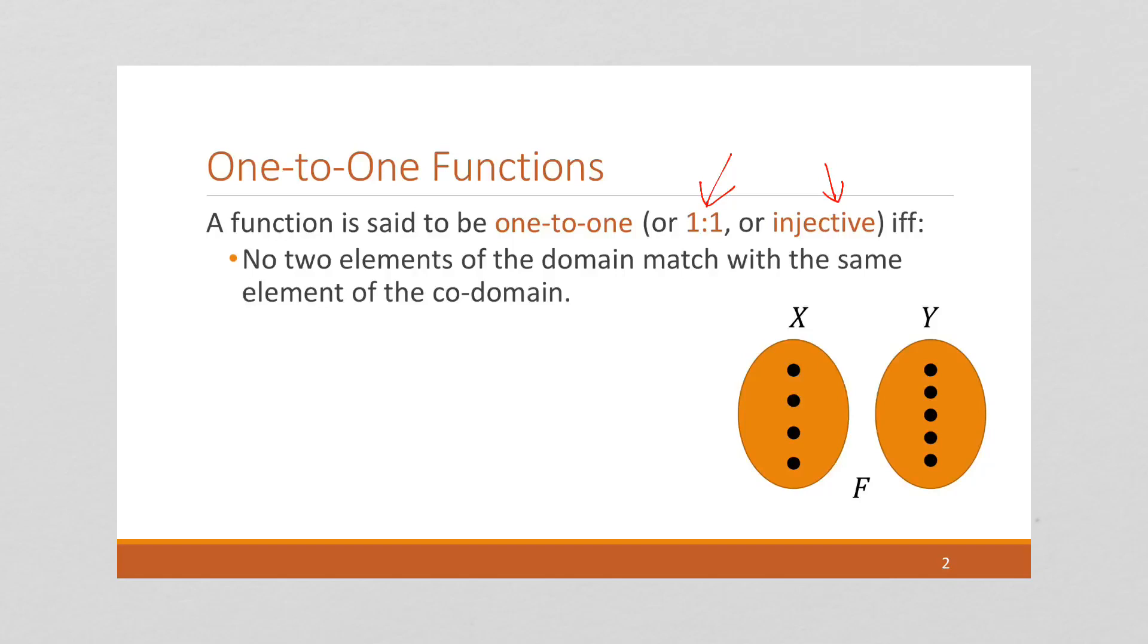A function is one-to-one if and only if no two elements of the domain match with the same element of the codomain. So let's draw a picture of this. Well, first of all, it's not a function because we've got these two loner arrows. Now it's a function.